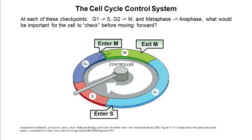Progression through the cell cycle is regulated at key stages by checkpoints, where the cell checks either that it's necessary to move to the next stage, or that important molecular events have occurred before it can proceed. There are three checkpoints: the first controls passage from G1 to S phase; the second controls progression from G2 to mitosis; and the third is at the metaphase-to-anaphase transition, also called the mitotic or spindle checkpoint.